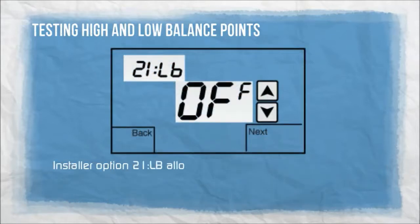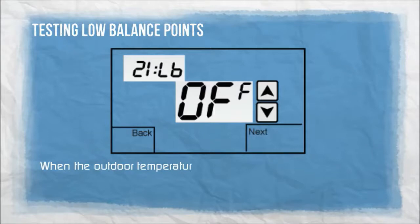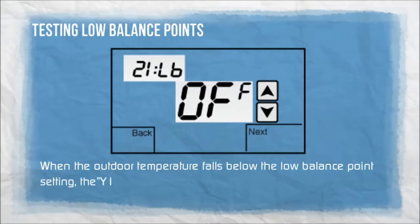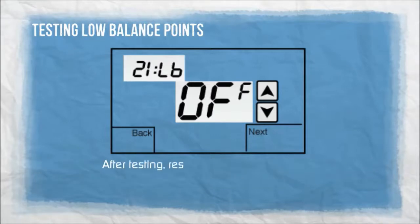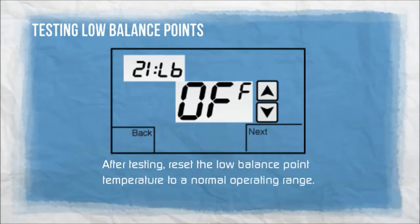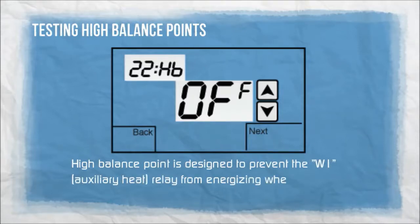Installer option 21LB allows you to select a low balance point temperature. When the outdoor temperature falls below the low balance point setting, the Y1 and/or Y2 compressor relays will be bypassed. After testing, reset the low balance point temperature to a normal operating range. High balance point is designed to prevent the W1 auxiliary heat relay from energizing when the outdoor temperature is above the balance point setting.